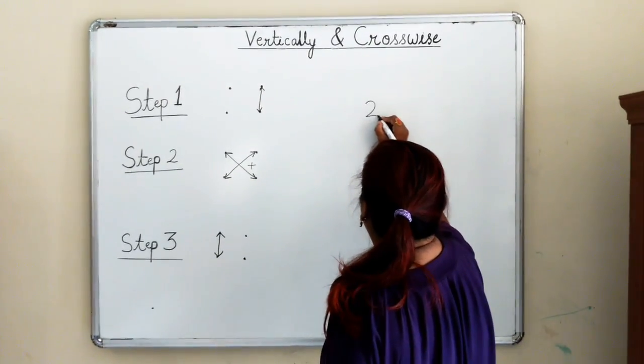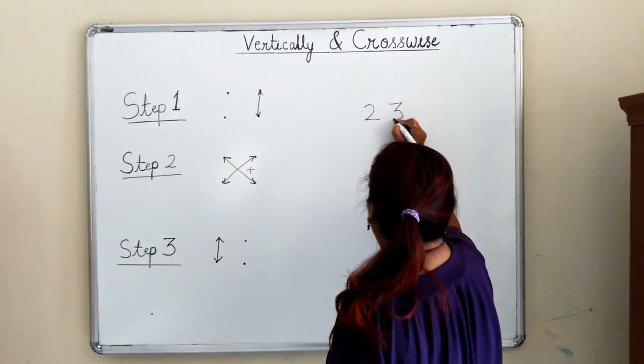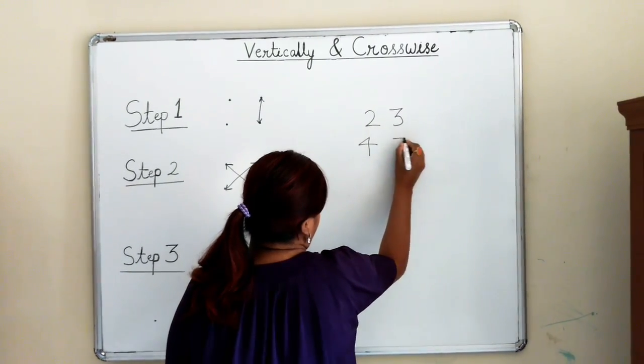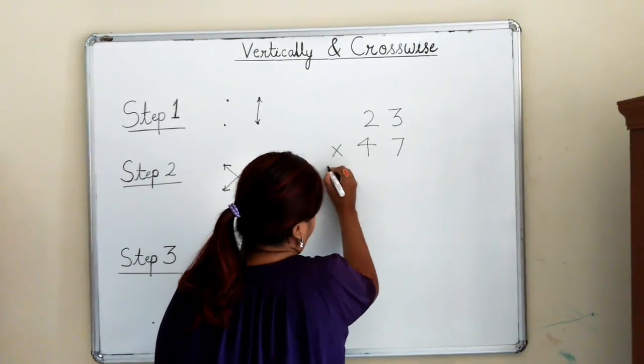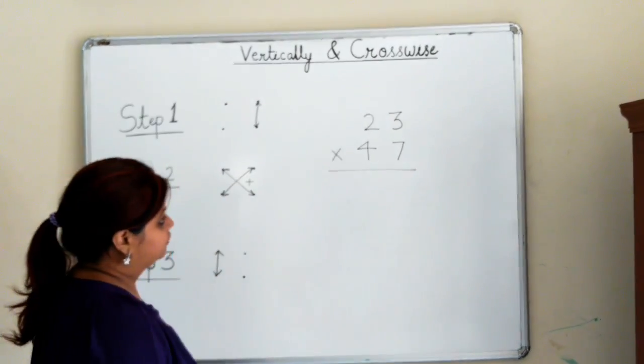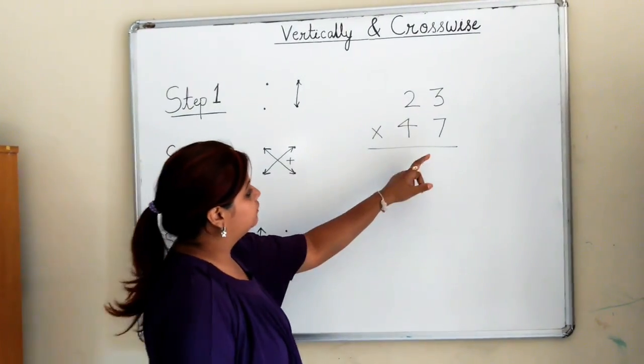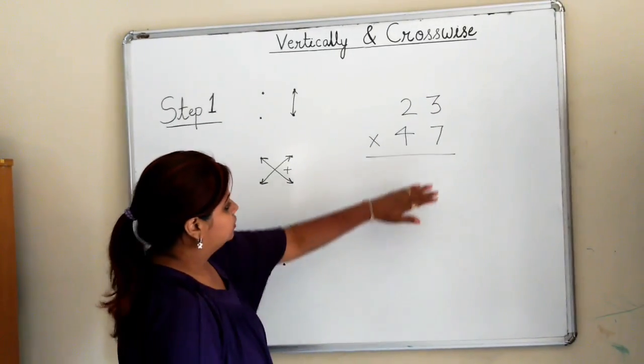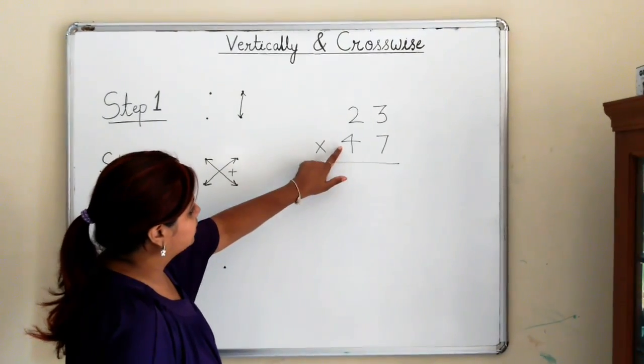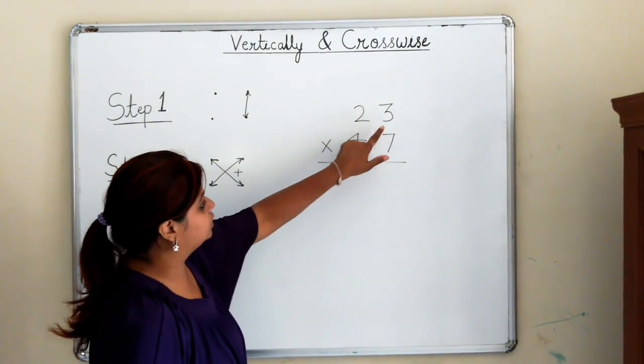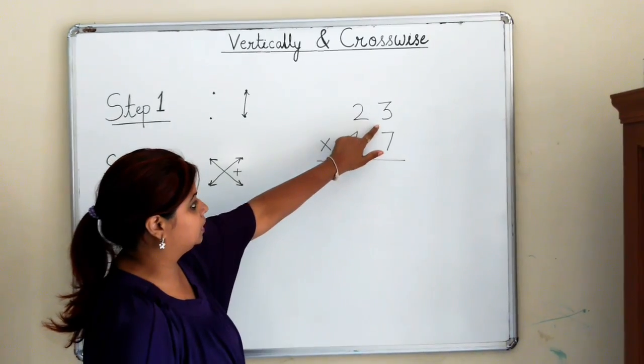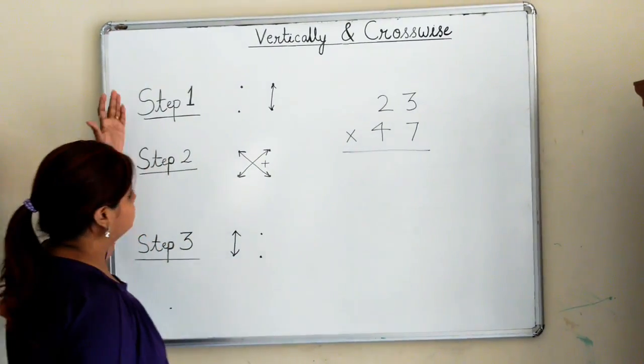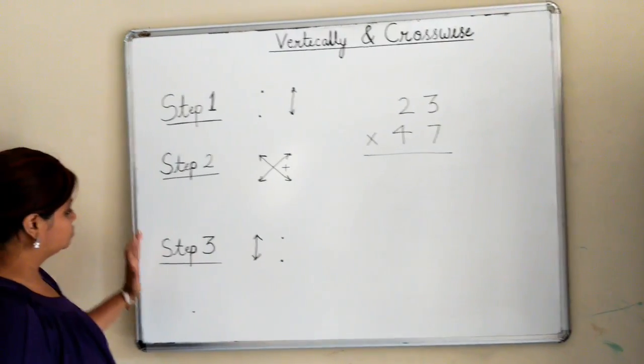I have taken two-digit numbers: 23 and 47. In conventional multiplication, you would multiply 7 with 3 and 2, write the answer here, then multiply 4 with 2 and 3, and then add. But here the steps reduce to just 3.